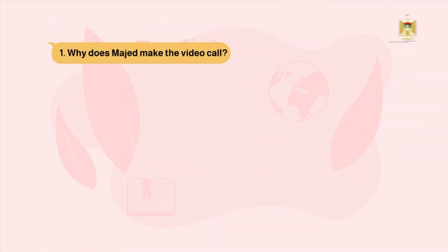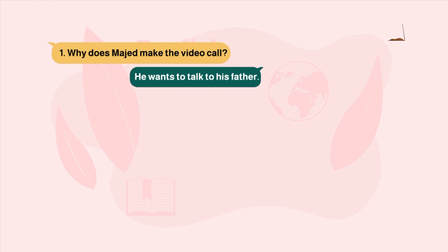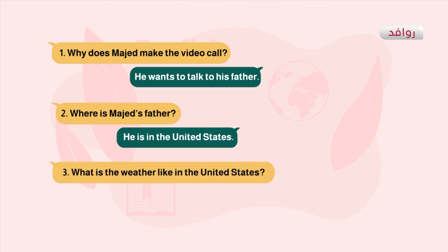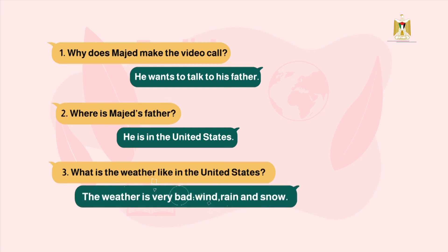Now that's enough. Let's answer the questions together. Activity 3 — number 1: why does Majid make the video call? The answer is: he wants to talk to his father. هو يريد أن يتحدث لوالده. Excellent. Number 2: where is Majid's father? The answer is: he is in the United States. هو في الولايات المتحدة. Number 3: what is the weather like in the United States? The answer is: the weather is very bad — wind, rain and snow. الطقس سيء والرياح ومطر ومثلج.